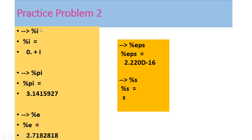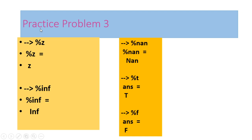As a practice: typing %i shows 0 + i (real part zero, imaginary part i). Typing %pi displays 3.1415927. Typing %e shows the exponent value, %eps shows epsilon, %s and %z are for polynomial variables, %inf for infinity, %nan for not-a-number, and %t and %f return true and false respectively.